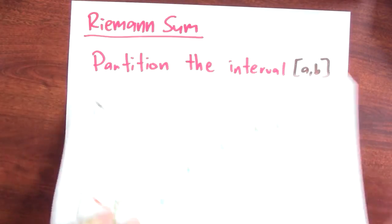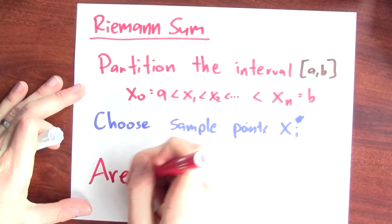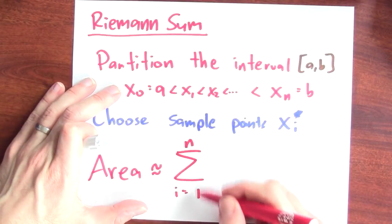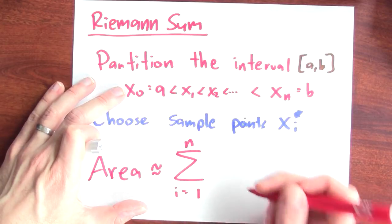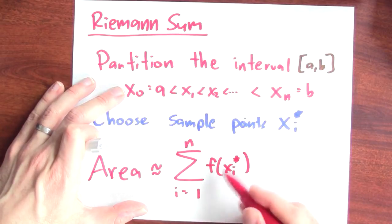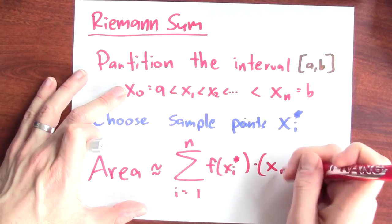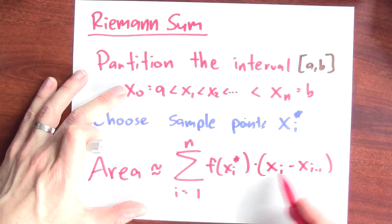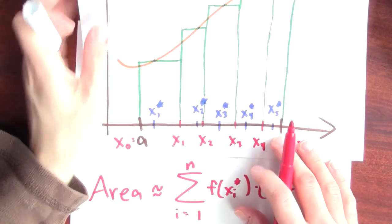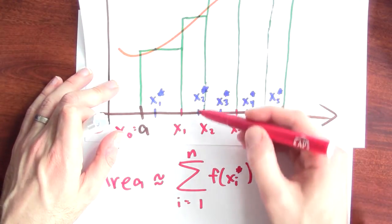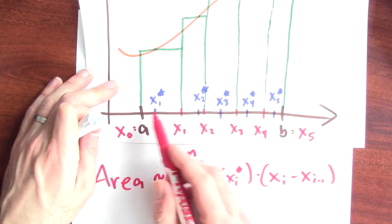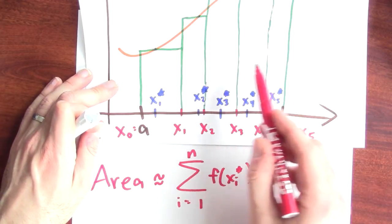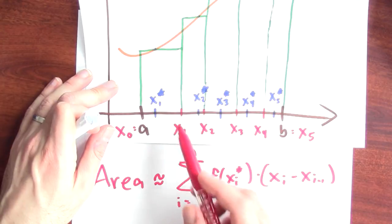Now I can write down a formula for the area. The area is approximately the areas of all these rectangles added up. The heights of these rectangles come from the function evaluated at the sample points, and the width has to do with how far apart the cut points are. The area is approximately the sum as i goes from 1 to n of f evaluated at the sample point x_i star, times the width of the i-th rectangle, which is x_i minus x_{i-1}. If I take the i-th cut point and subtract the previous cut point, that difference gives me the width. Adding up the areas of all the rectangles gives an approximation for the total area under the curve.